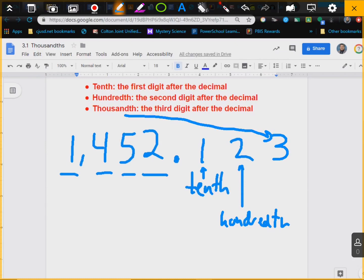And this would be the thousandths. So if we have 1,452.123, the one is the tenth, the two is the hundredth, the three is the thousandths. There's no ones place, it starts with tenths. So it starts with the tenths, hundredths, and thousandths.